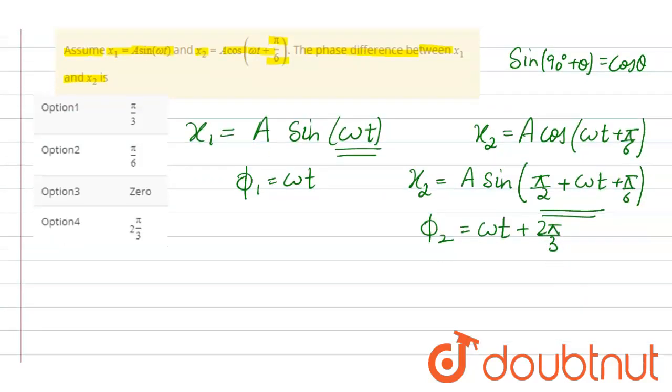Now we have to calculate the phase difference. That means delta phi, which can be calculated by phi 2 minus phi 1.